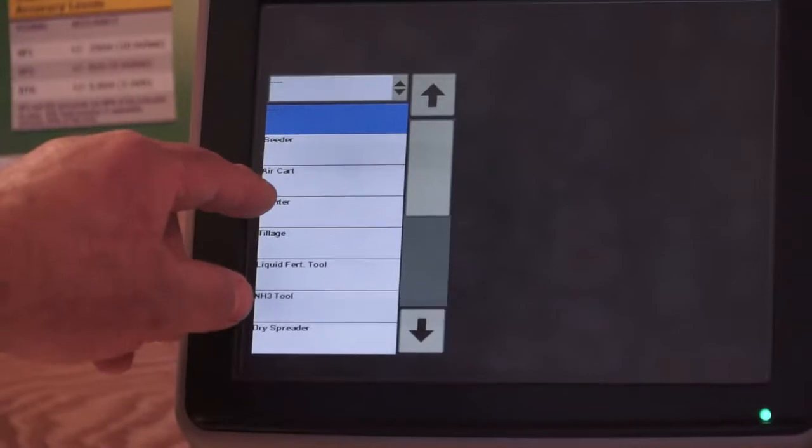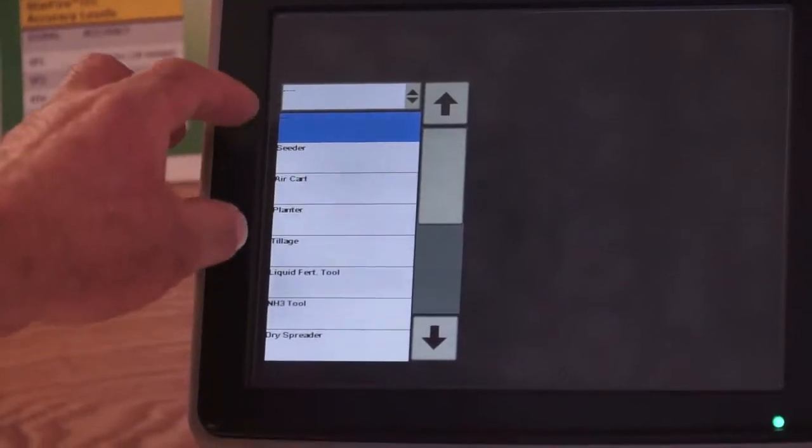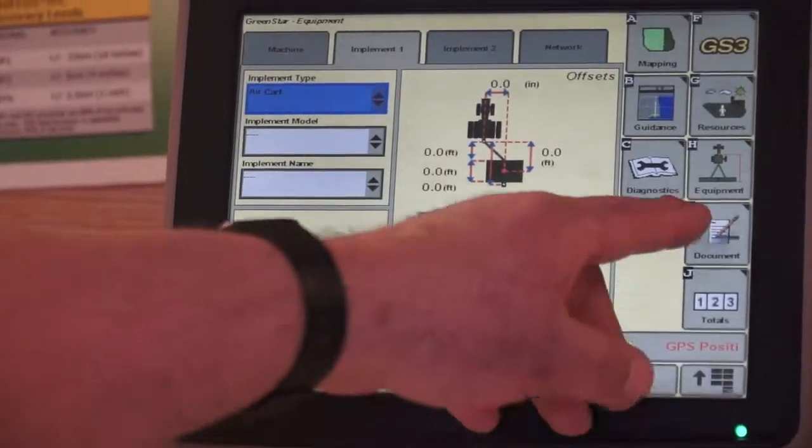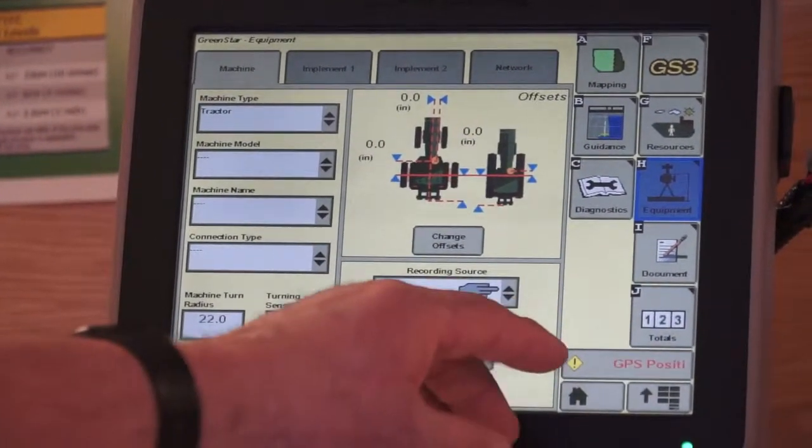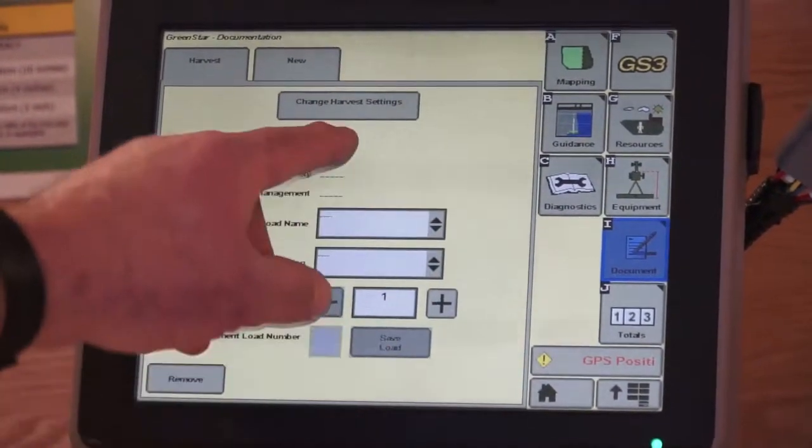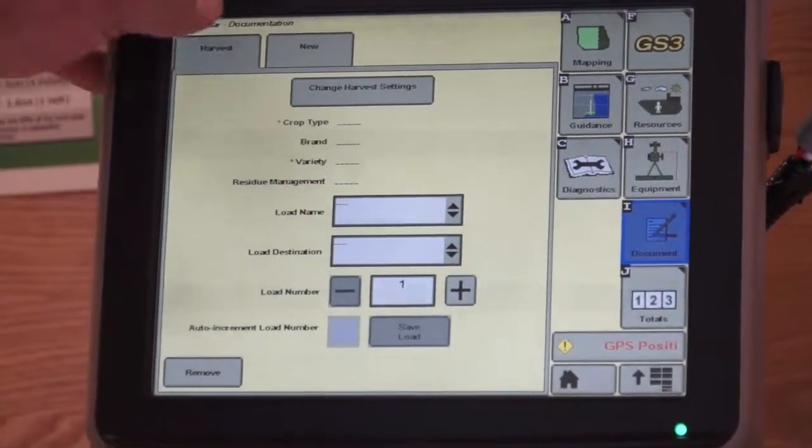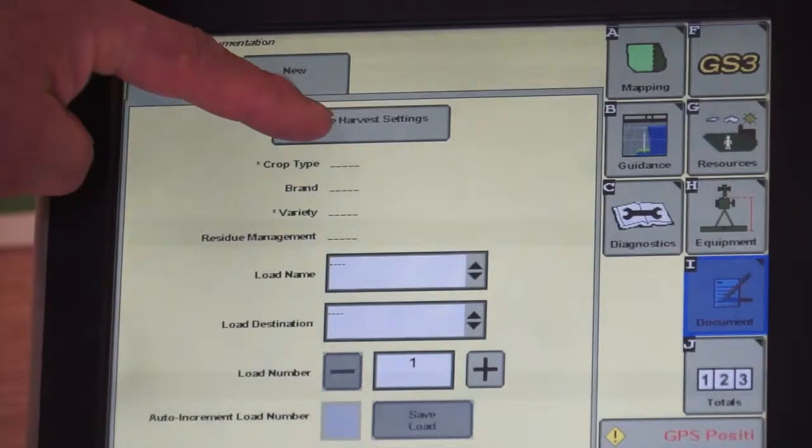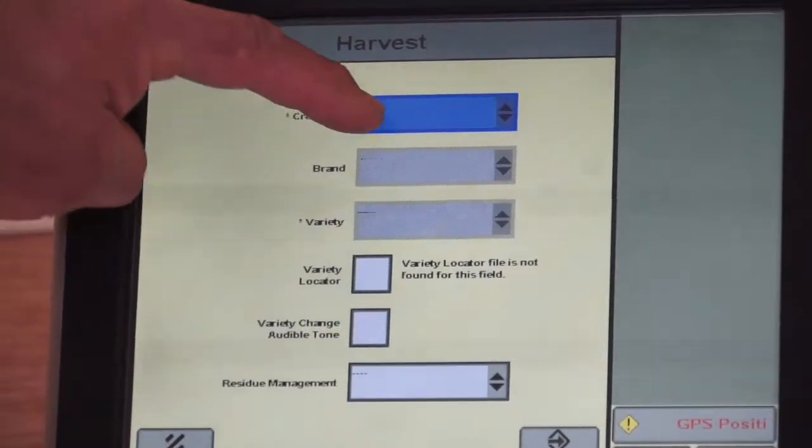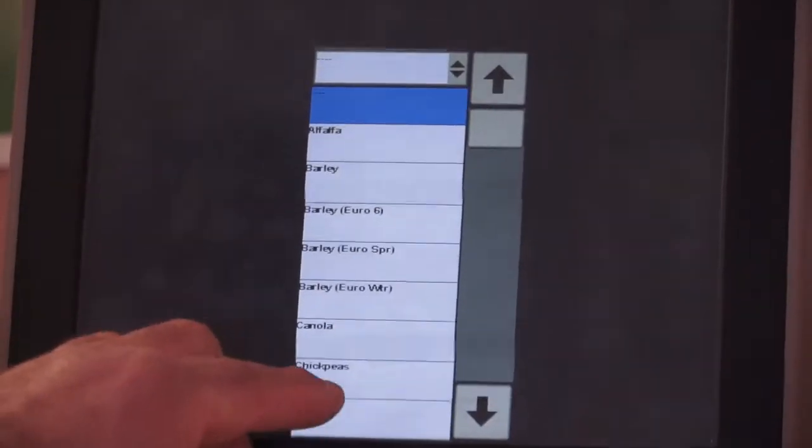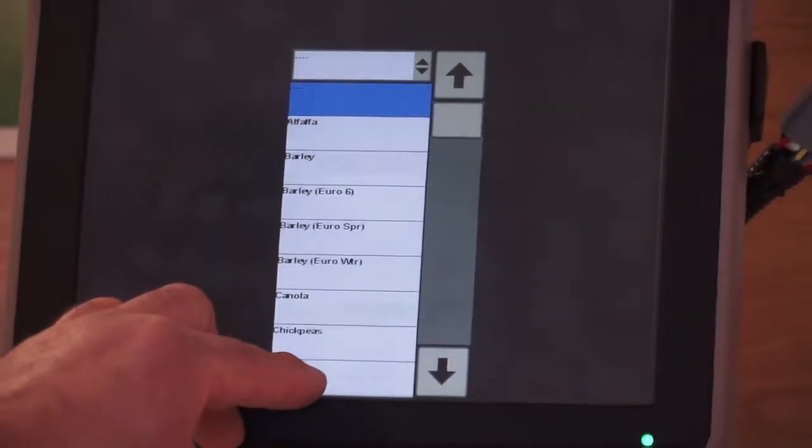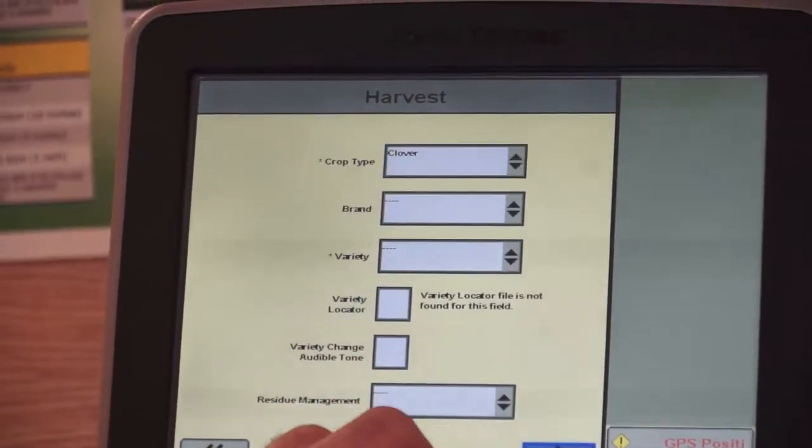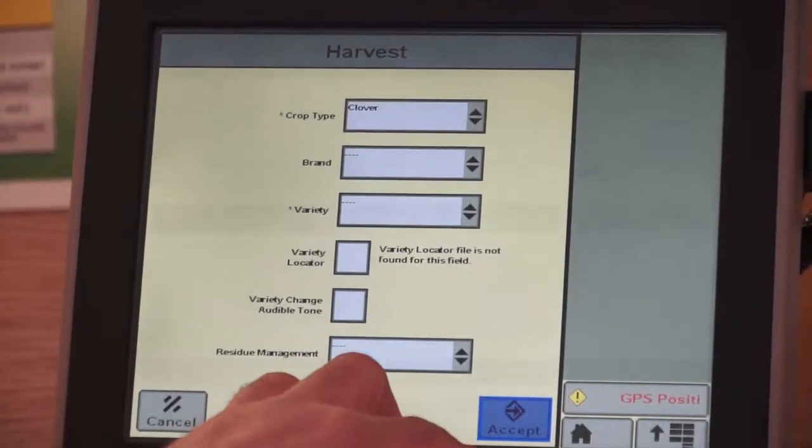Implements. If I'm pulling an air cart, we need that filled out properly for documentation. Documentation tab. This needs to be filled out properly as well. Here we're set at harvest right now. So if I open up change harvest settings and I change my crop to, let's say clover, brand and variety must be filled out for proper documentation during harvest.